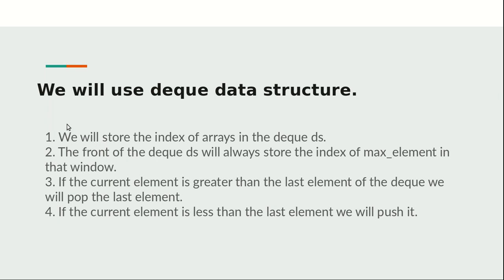For this problem I'm going to use the deque data structure. I'll store the indexes of the array in the deque, and at each step the front of the deque will store the index of the maximum value in that window. We'll maintain elements in decreasing order — if the current element is greater than the last element at the back, we pop from the back until the current element becomes the greatest. If the current element is less, we just push it.